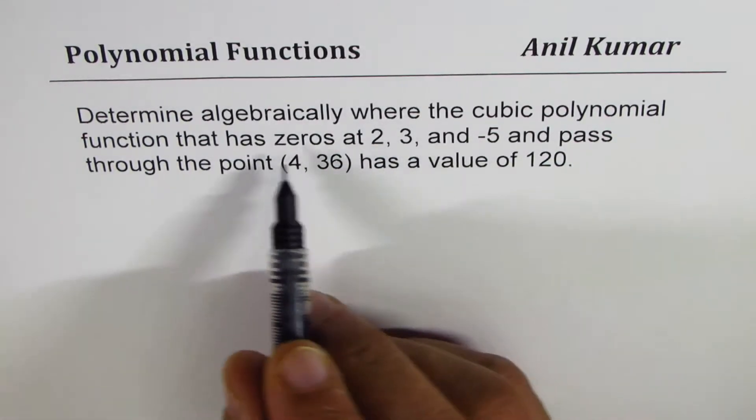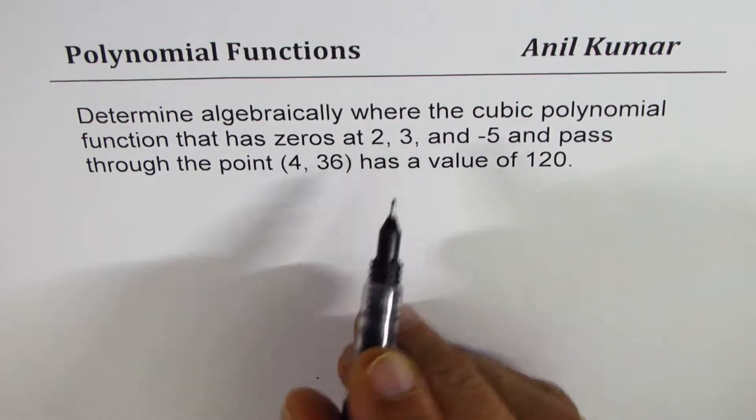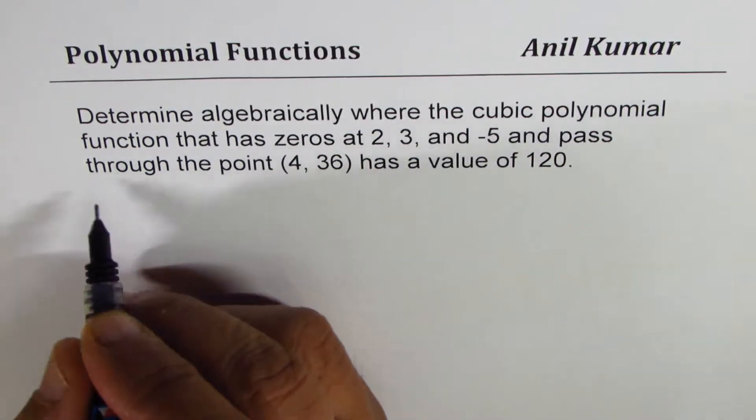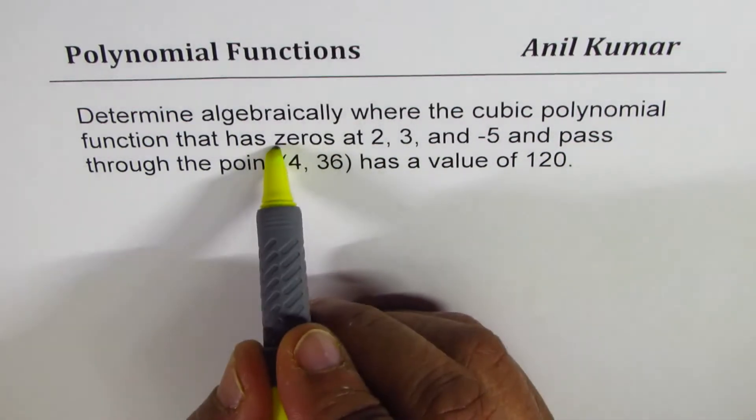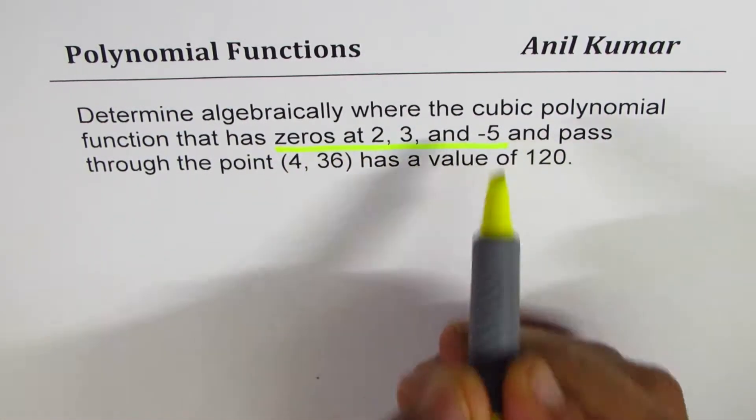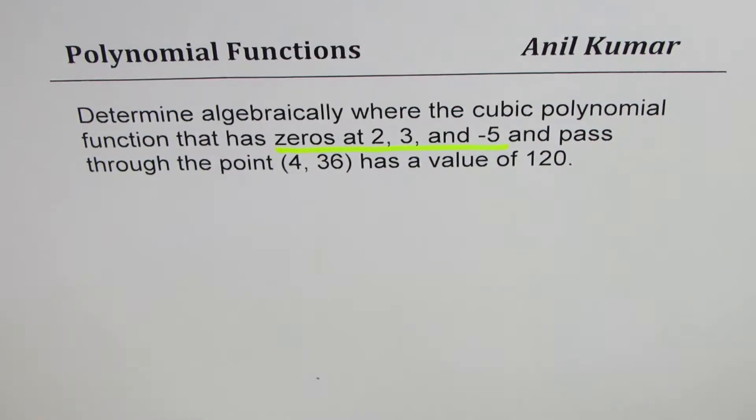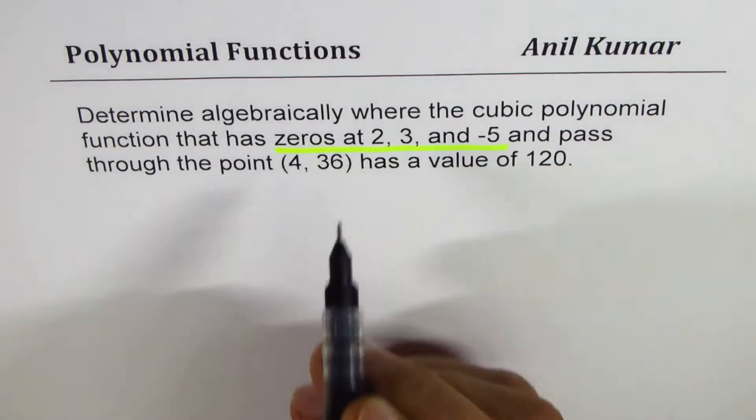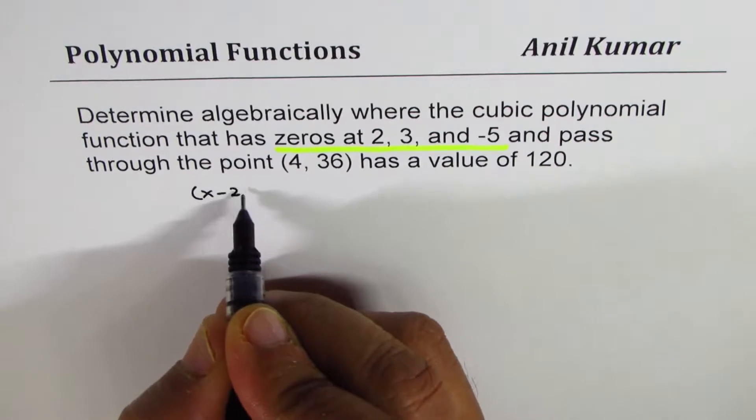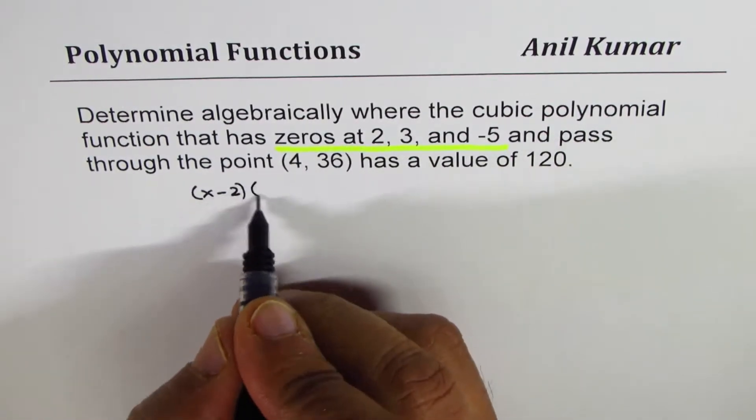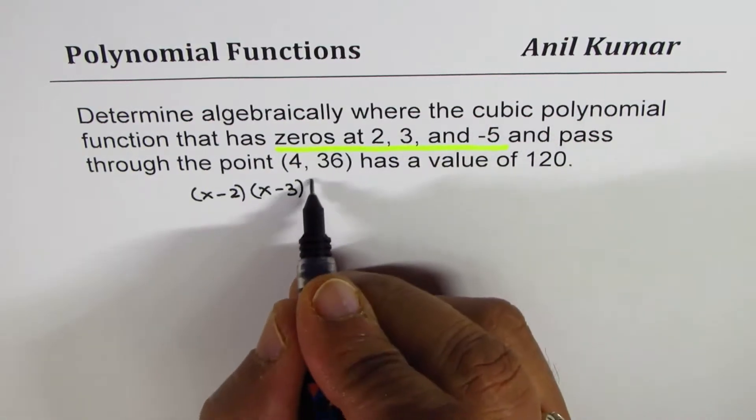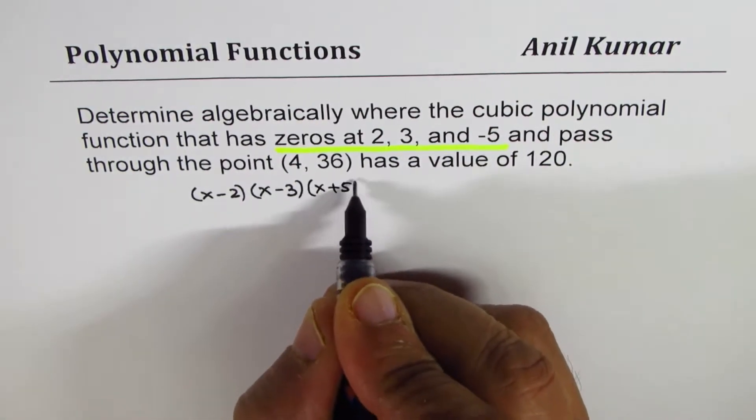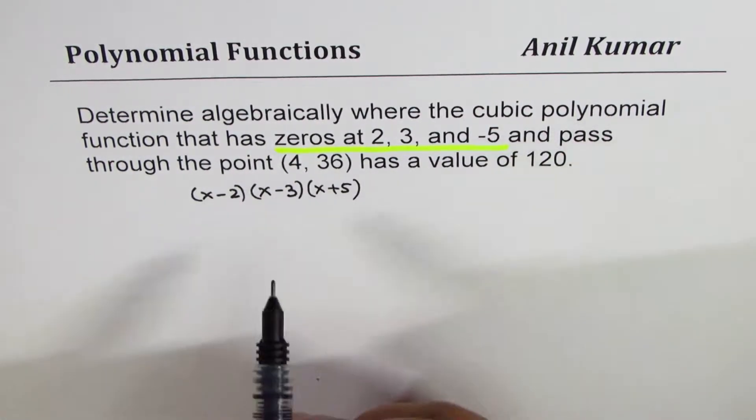So we are given here that we have zeros or x-intercepts at 2, 3, and -5. So let's look into this line first. Zeros of 2, 3, and minus 5. That really means that the factors are (x - 2), that will give you 0 at 2, (x - 3) will give me 0 at 3, and (x + 5) is going to give 0 at -5.